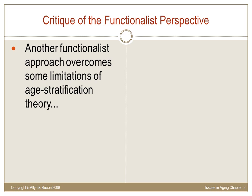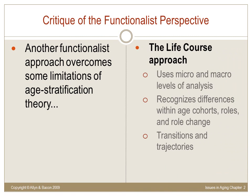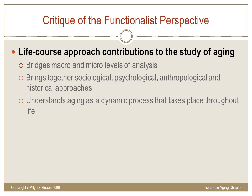Another functionalist approach, the life course perspective, may bridge the micro and macro levels of analysis and overcome some limitations of age stratification theory. Life course perspective acknowledges differences within age cohorts, social roles, and role changes. It incorporates social interaction and social structure within its framework, and may merge several theoretical perspectives from various disciplines. It recognizes variety in life course patterns, differences within and between members of the same age cohort such as race, gender, social class, and ethnicity, and views life as a dynamic process that is interactive, multidirectional, and lifelong, allowing for stability, decline, and improvement.